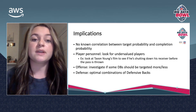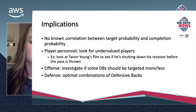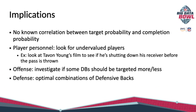There are a few implications of these two models. There's no known correlation between target probability and completion probability, so even if a player has a really low completion probability, that doesn't mean that most teams are throwing less to him.